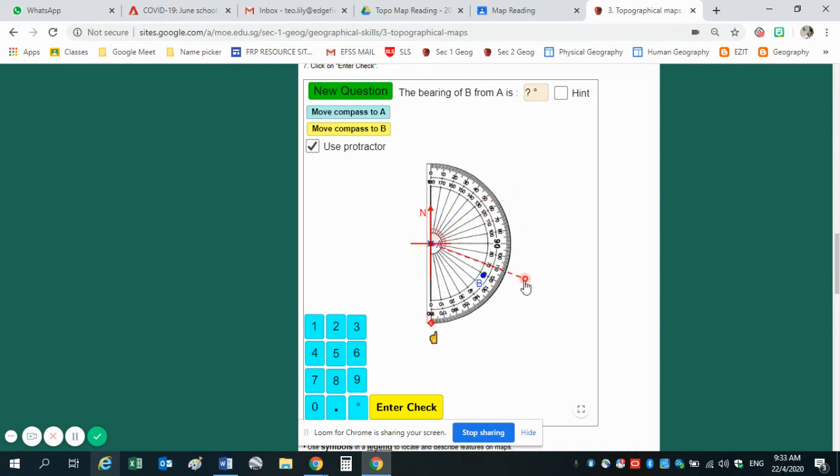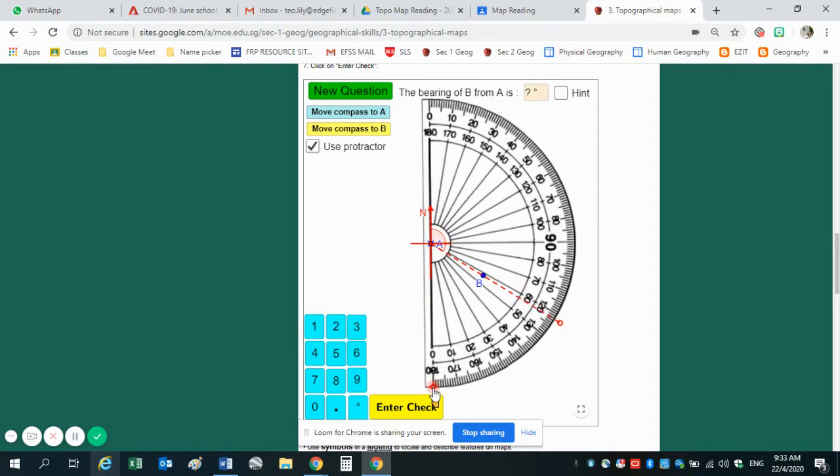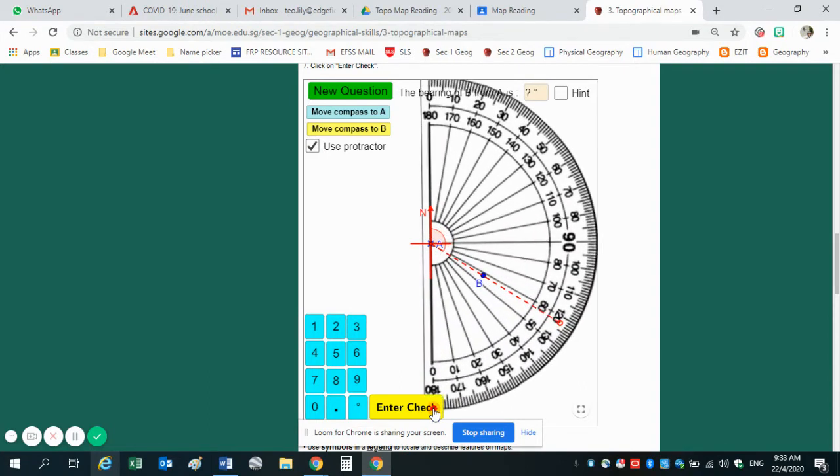And of course, you have to connect the two points, A and B, with a straight line. Now, if it's too small to be seen, you can enlarge your protractor. And then of course, you can look at the line here.